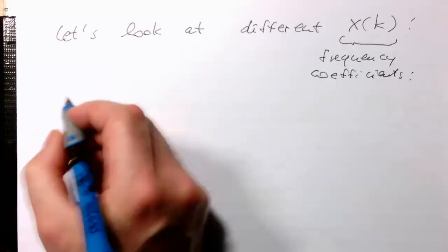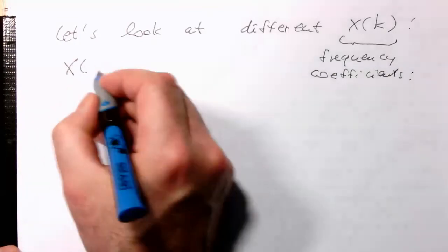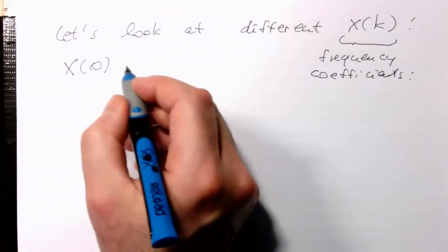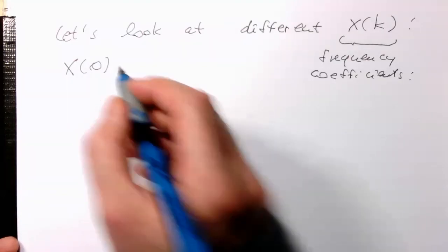Let's have a look first at x of 0. So what is that? x of 0 is actually our DC.